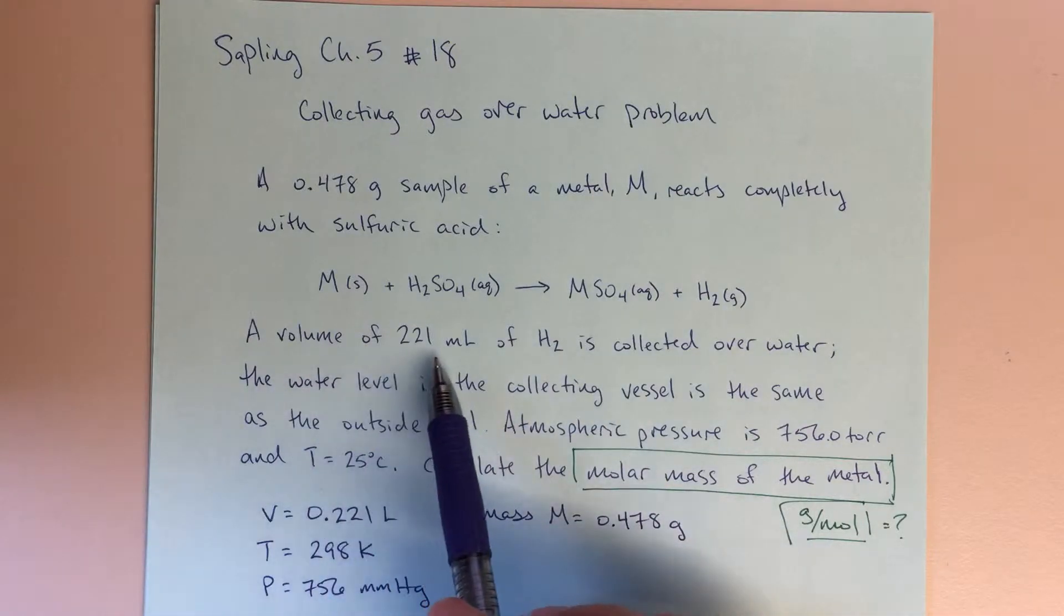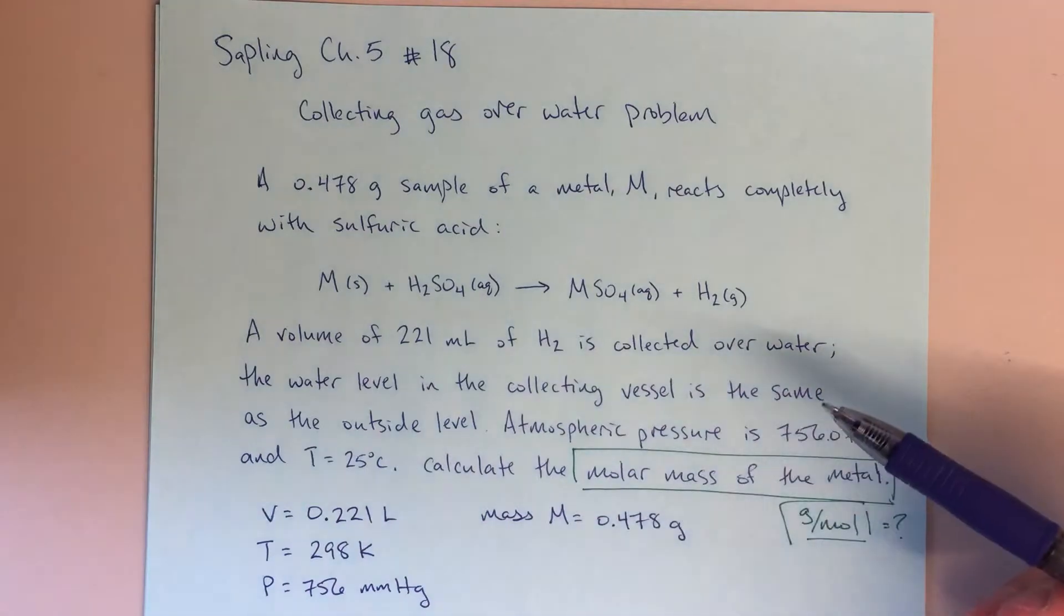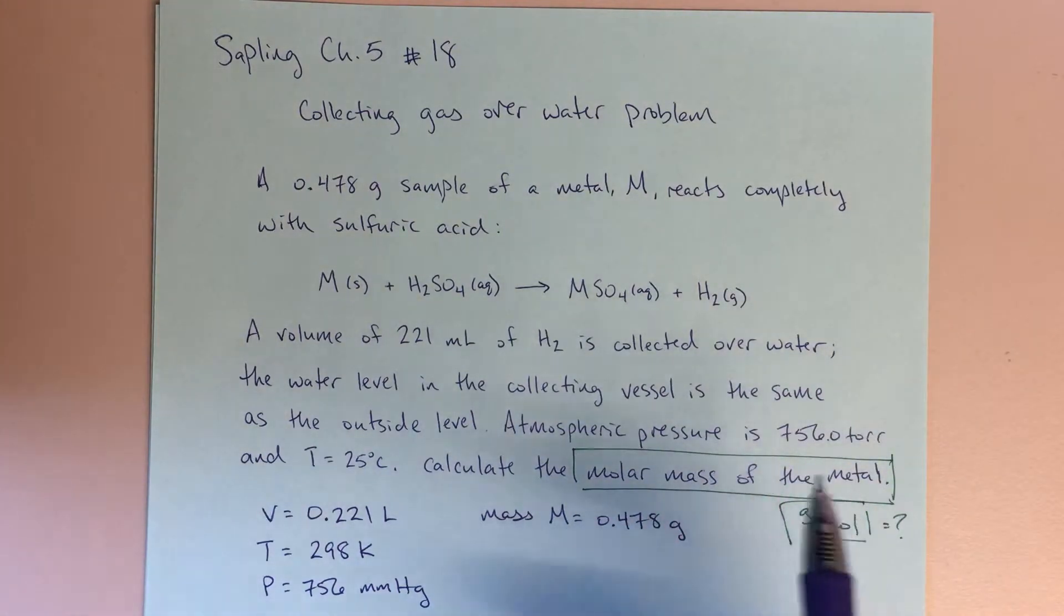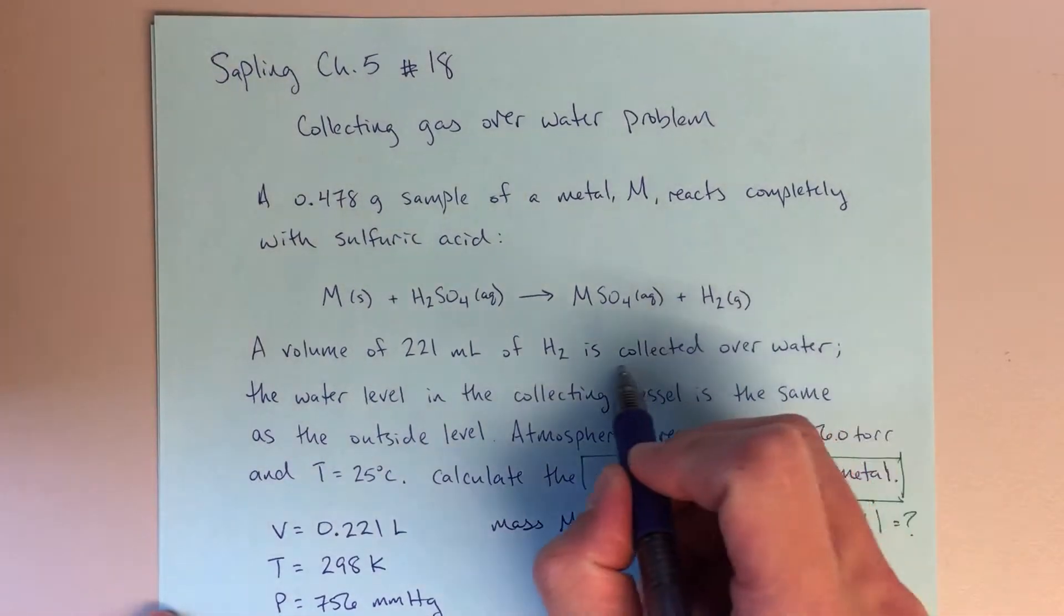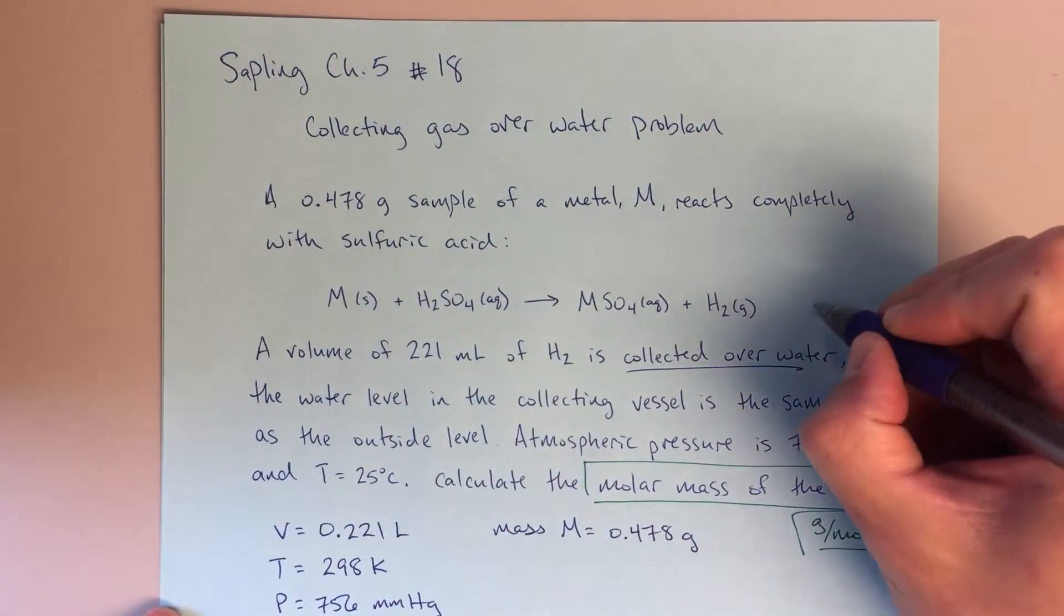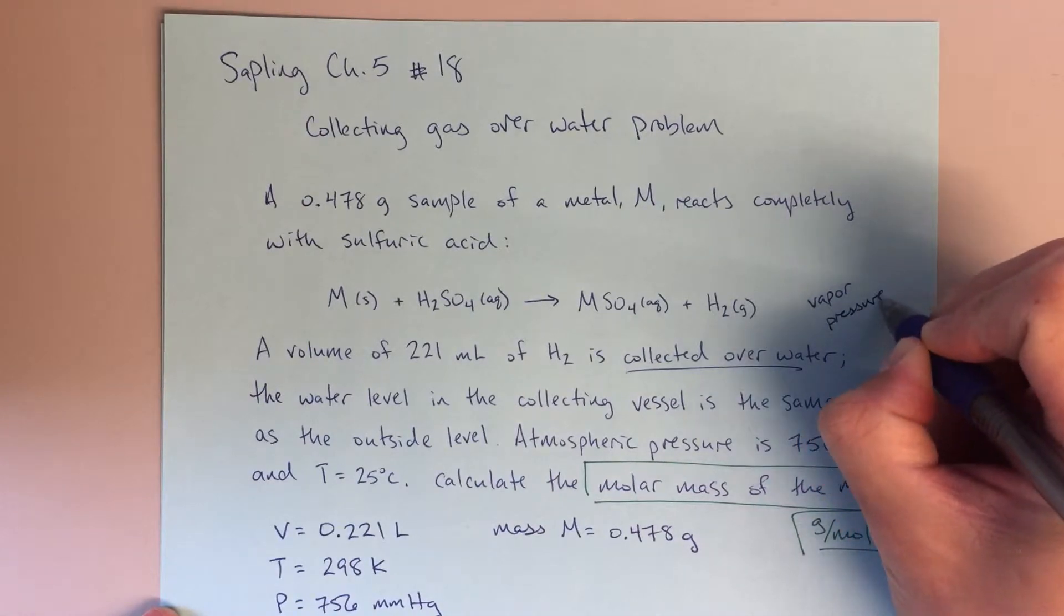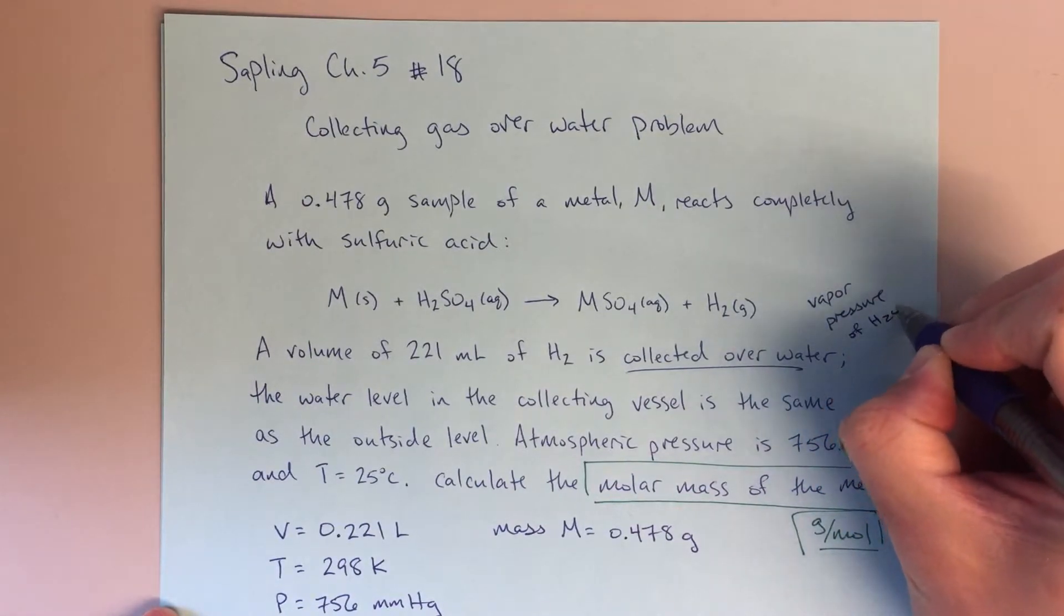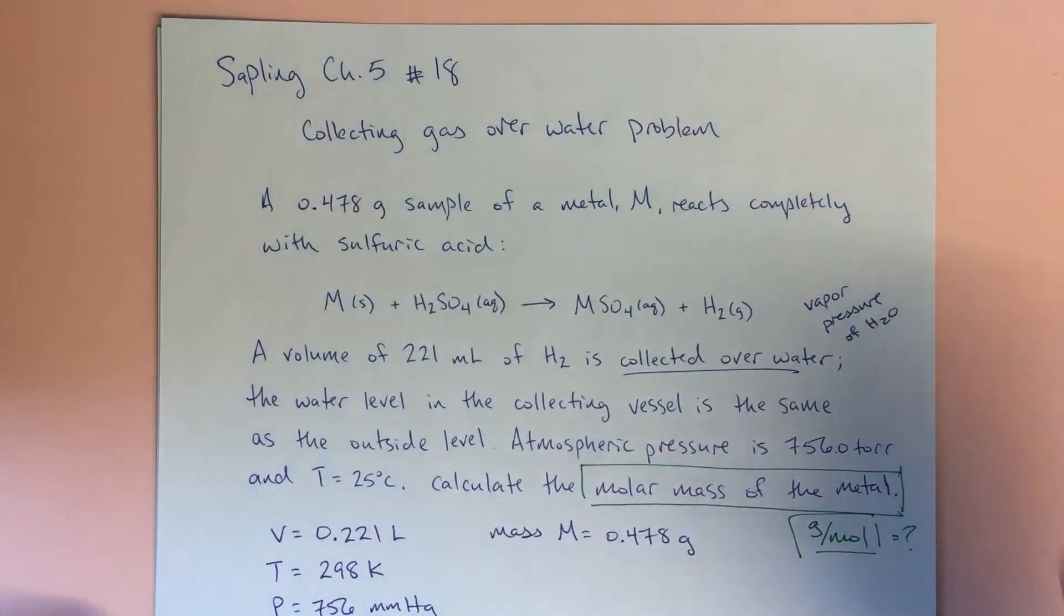It says a volume of 221 milliliters of H2 is collected over water. So that's just like we did in the lab, right, we've got our gas collection tube, we're going to collect it over water. That right there, collected over water, that tells me that I need to think about the vapor pressure of water. So those words right there tell me, in the back of my mind, vapor pressure of water, I'm going to need to take that into account somehow.